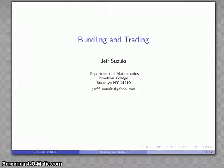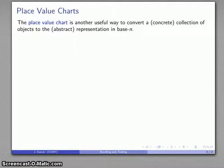A useful thing to be able to do when dealing with a large number of objects is bundling and trading. This is centered around what we call a place value chart, and it's a useful way of converting a concrete collection of objects to an abstract representation of the number in base n.